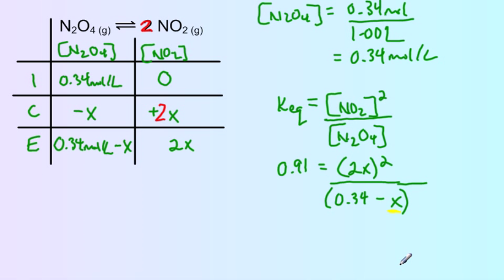If x is very, very small, like 0.00003, then 0.34 minus x is pretty much 0.34. There are situations where we can ignore x if we know it's going to be really small. How do we know whether we're allowed to ignore a subtracted x like that?